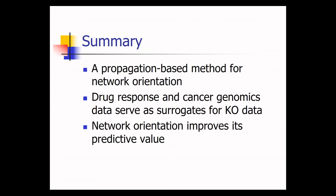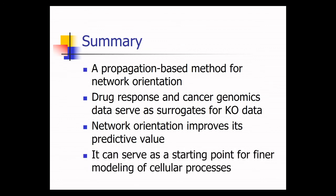So to summarize, I've shown you a propagation based method for network orientation, which is based on using drug response and cancer genomics data as surrogates for knockout data. And I've tried to demonstrate that this orientation really improves the predictive value of the network. And there's just one last angle that I would like to cover, which is the one that we actually started the talk with. The fact that I believe that this oriented network can serve as a starting point for functional modeling of cellular processes.